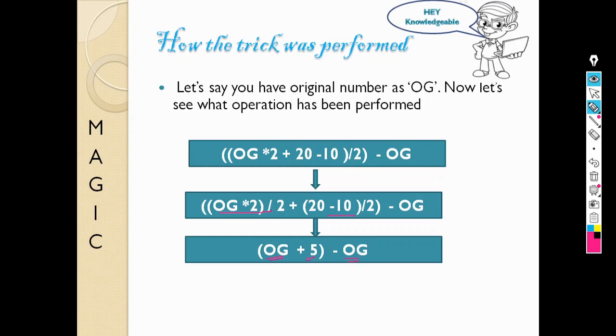If you see the total thing, I need not have to know the original number. I just have to know the operations which you have given in the middle. That will help me to know the answer. That's why even if you have not divulged your number, I was able to guess what is left in your hand.